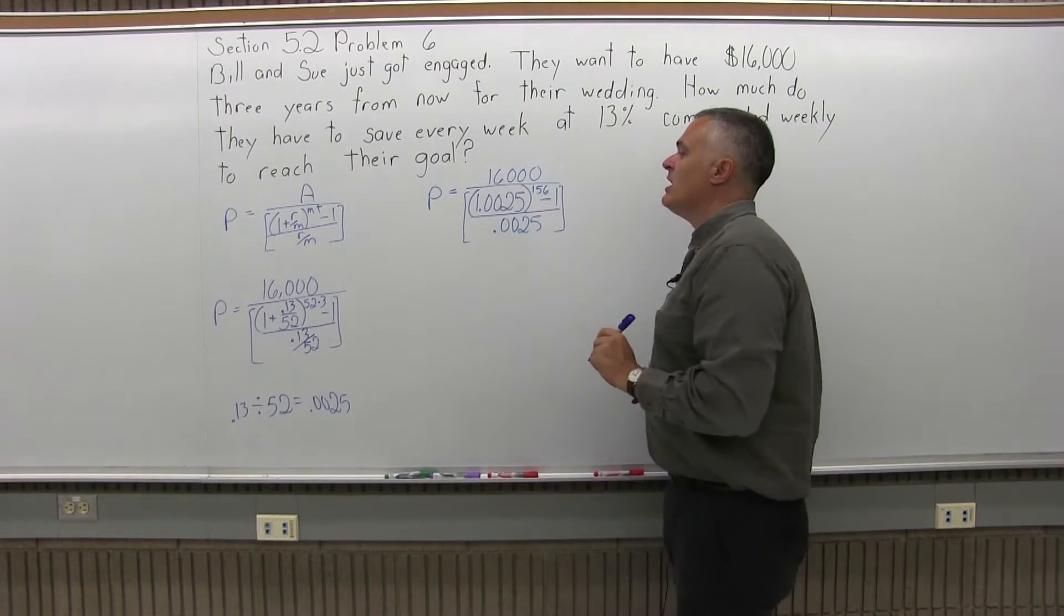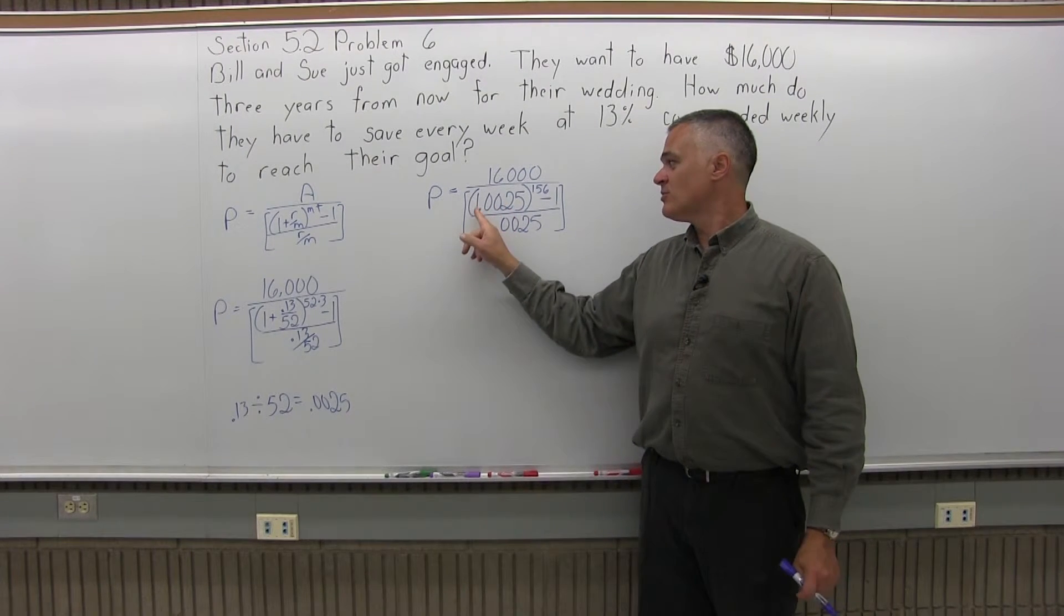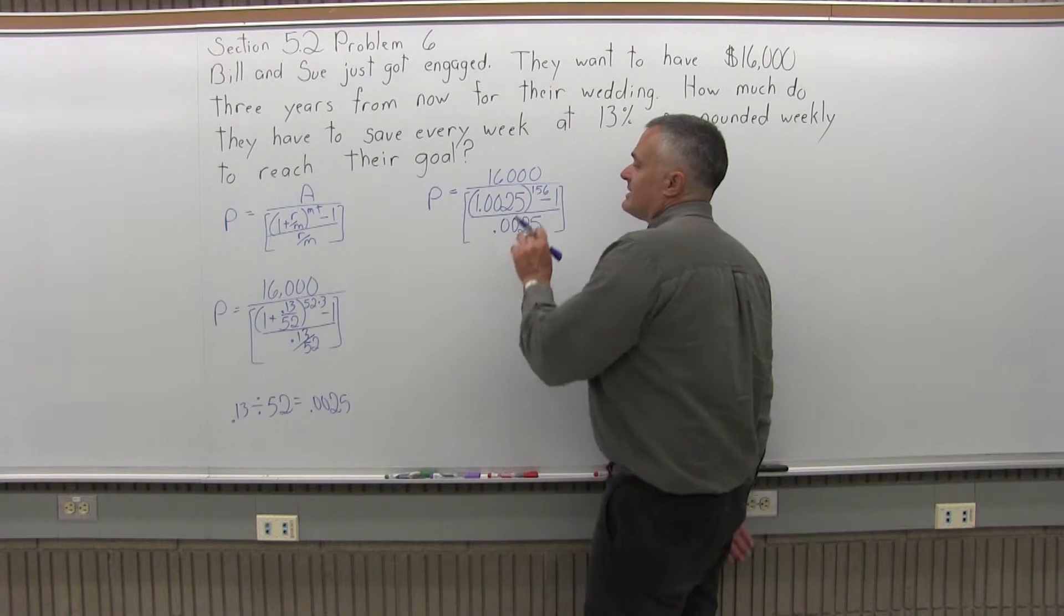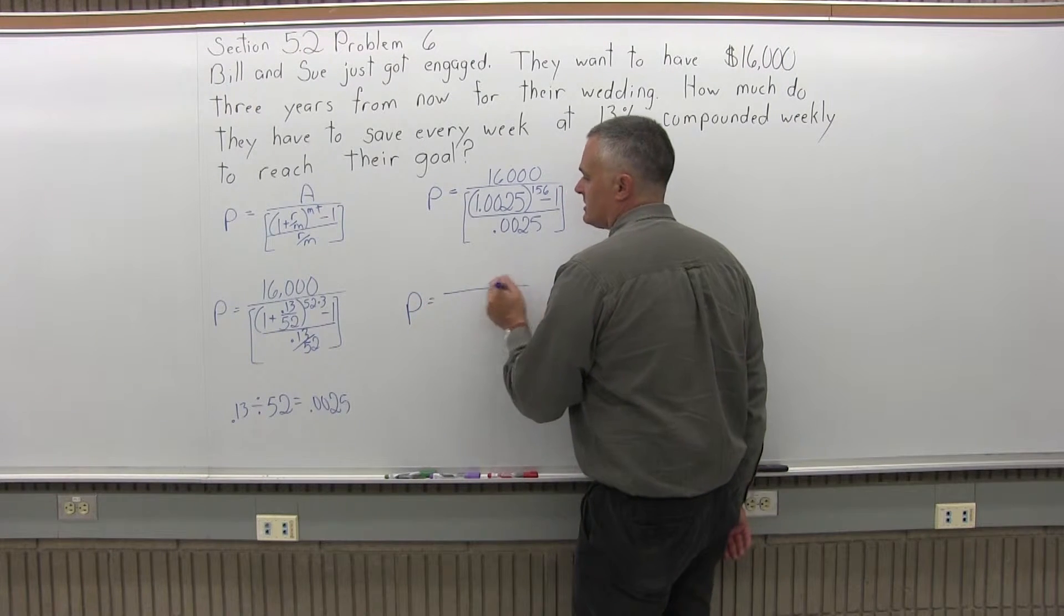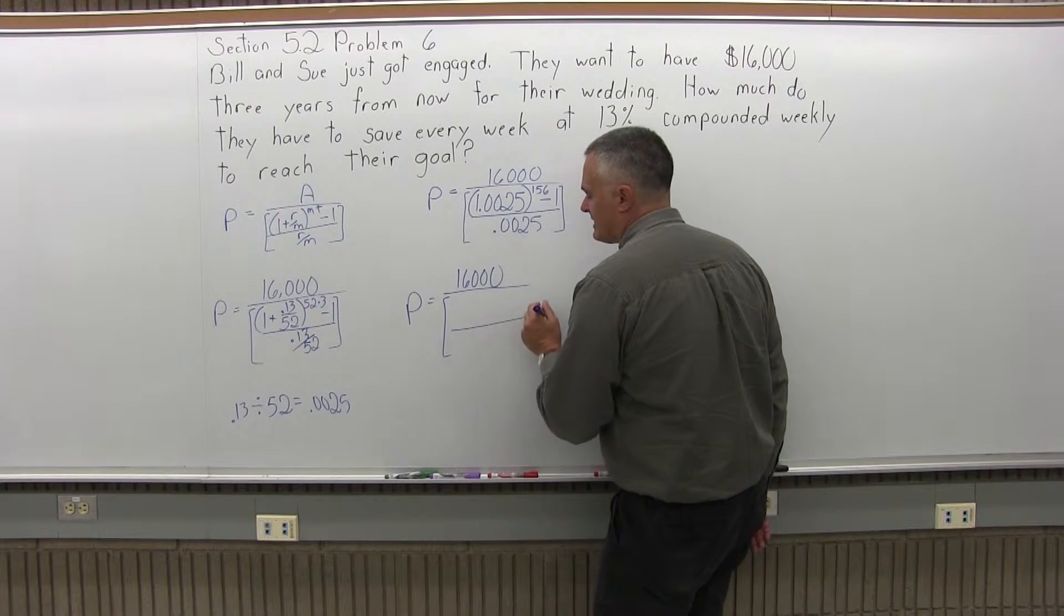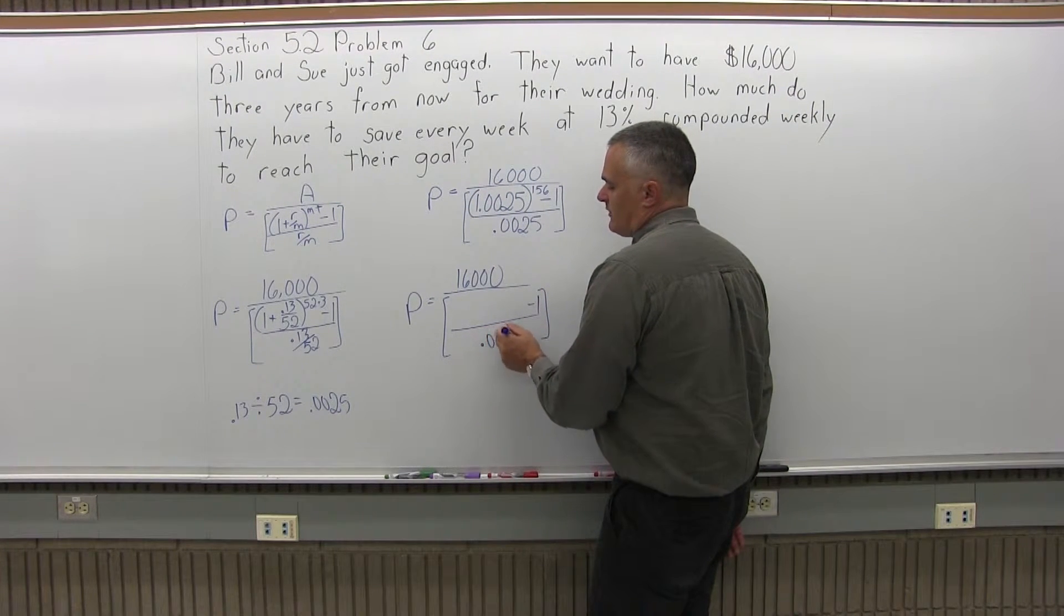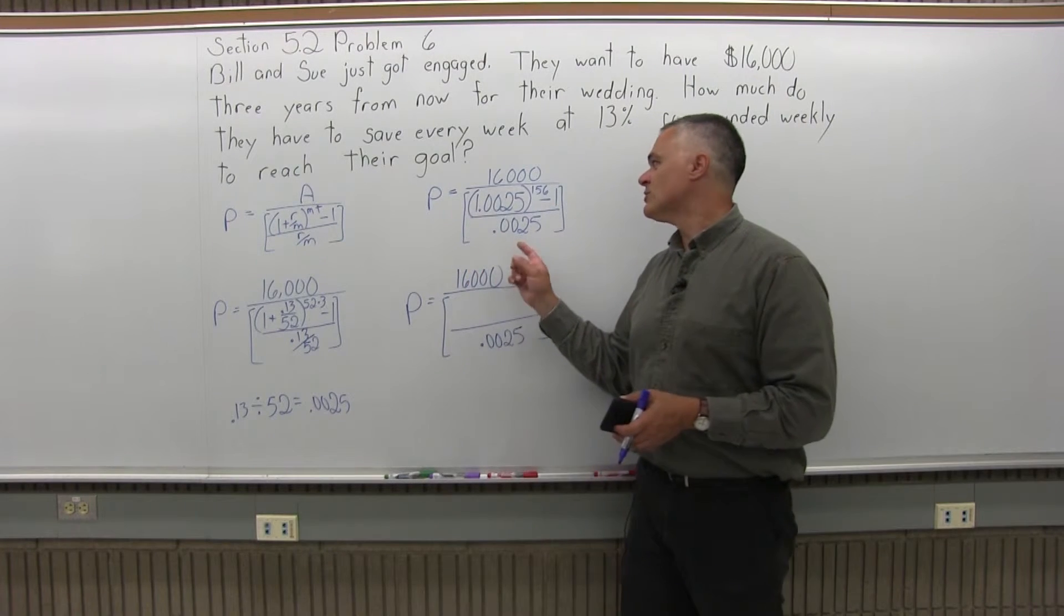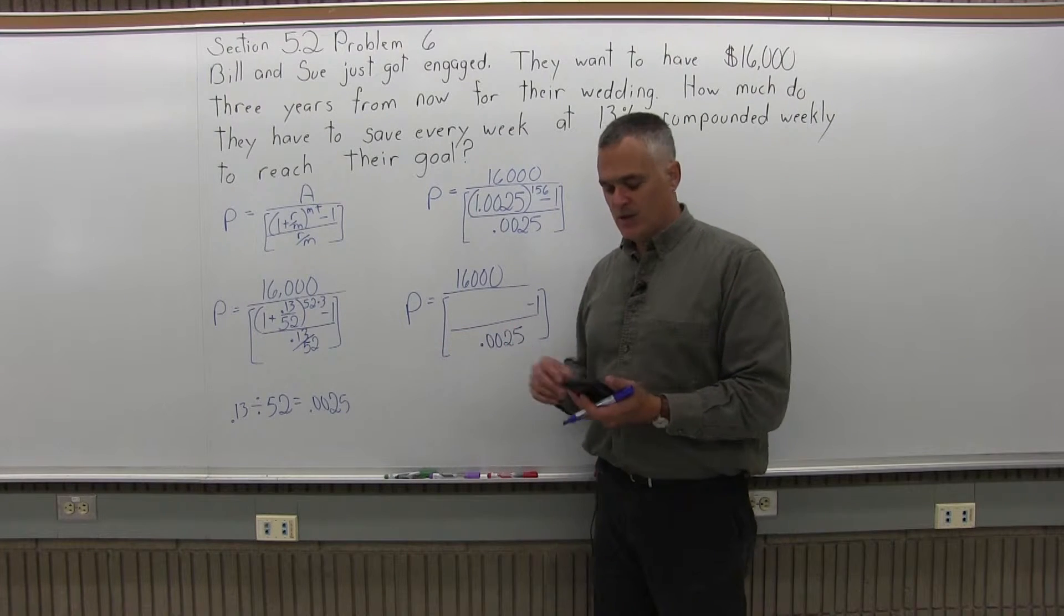And like the previous type of formula, you have the same decimal in the numerator and in the denominator of your brackets. In the numerator, there's a 1 in front. In the denominator, there is not. So what happens next is this big exponent of 156th power. I'm going to have P equals 16,000 over some brackets. And in the numerator of the brackets, I'm going to have some big number minus 1. There's a 0.0025 in the denominator of the brackets. And that big number I referred to is going to come from 1.0025 to the 156th power, which is a huge computation, which the calculator will do easily.